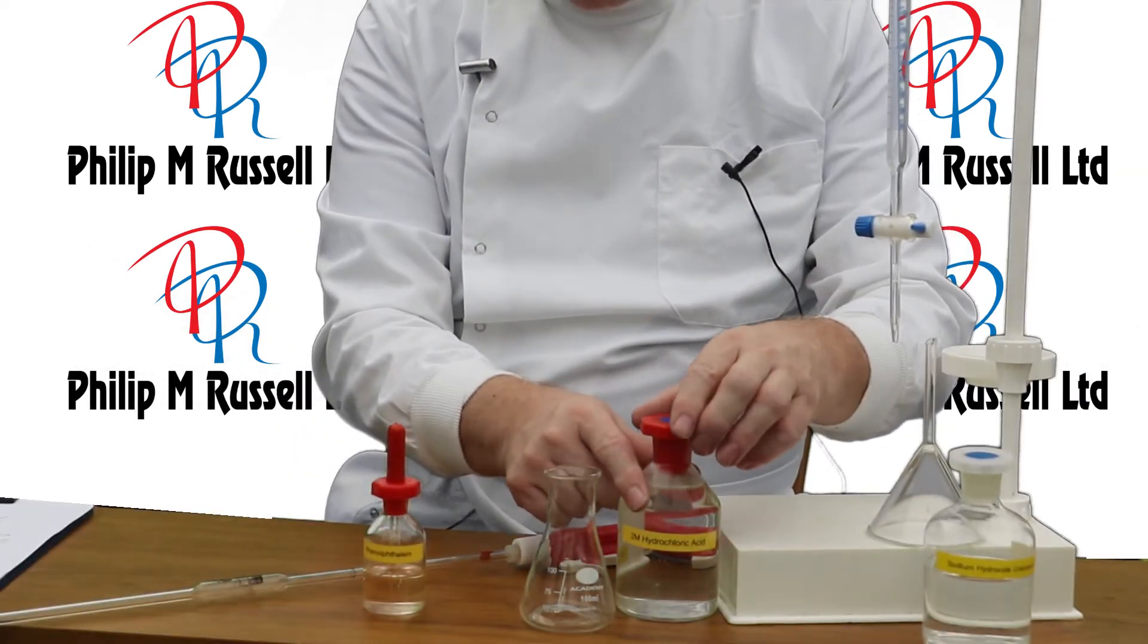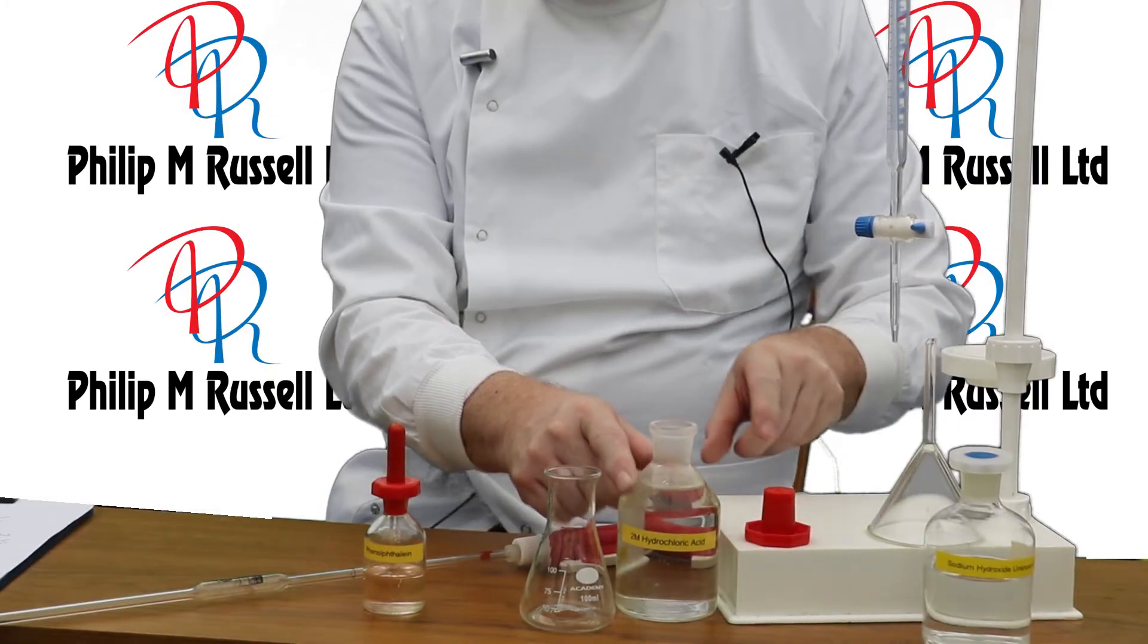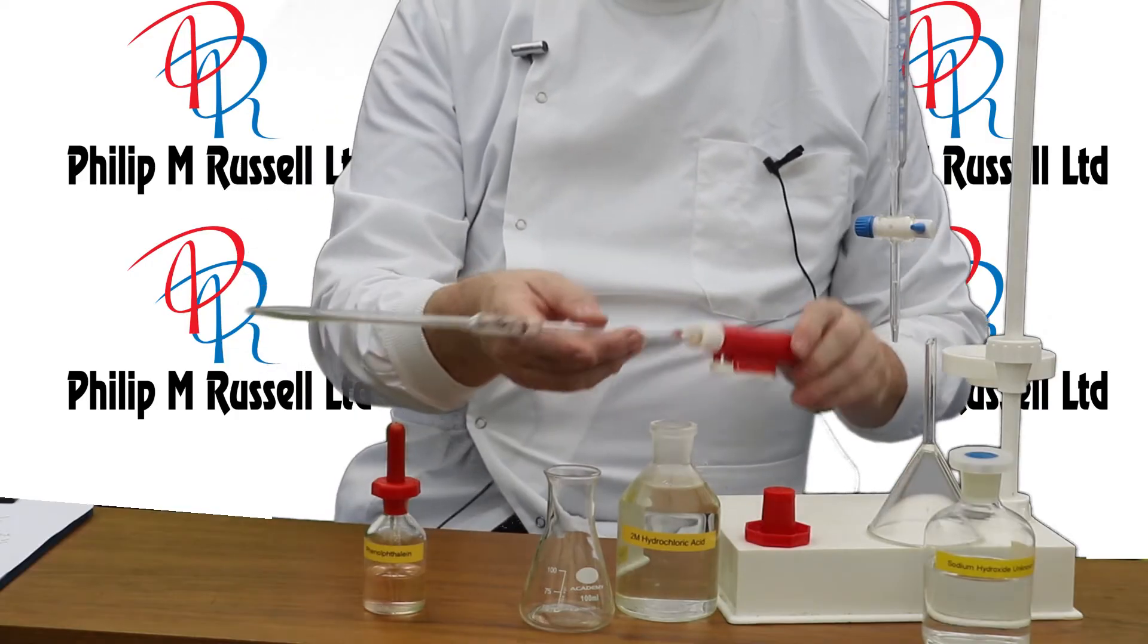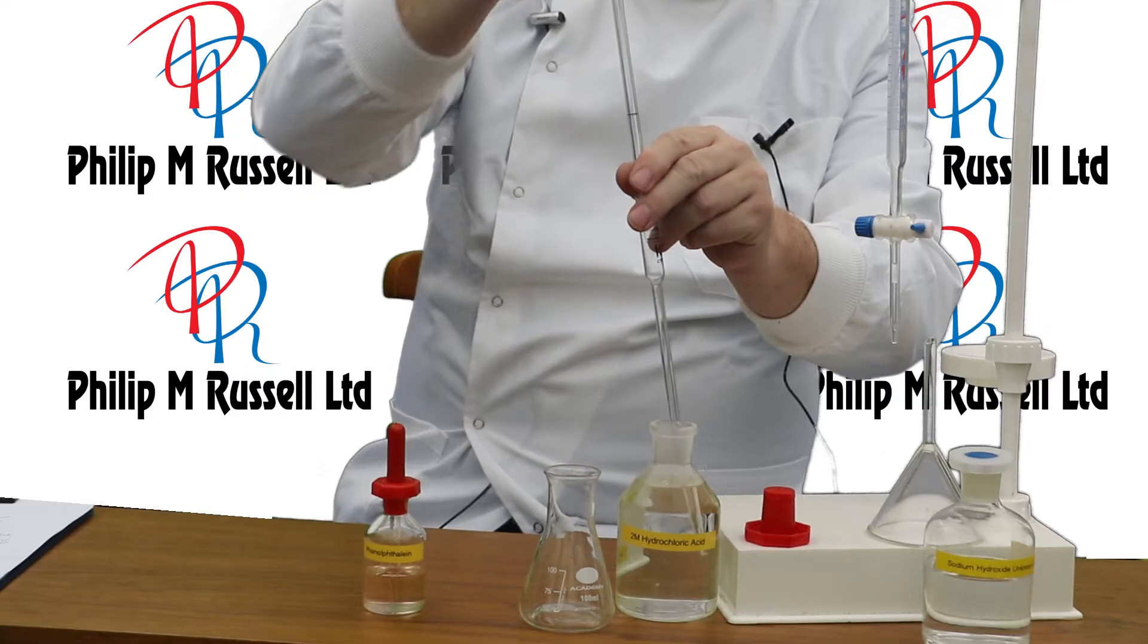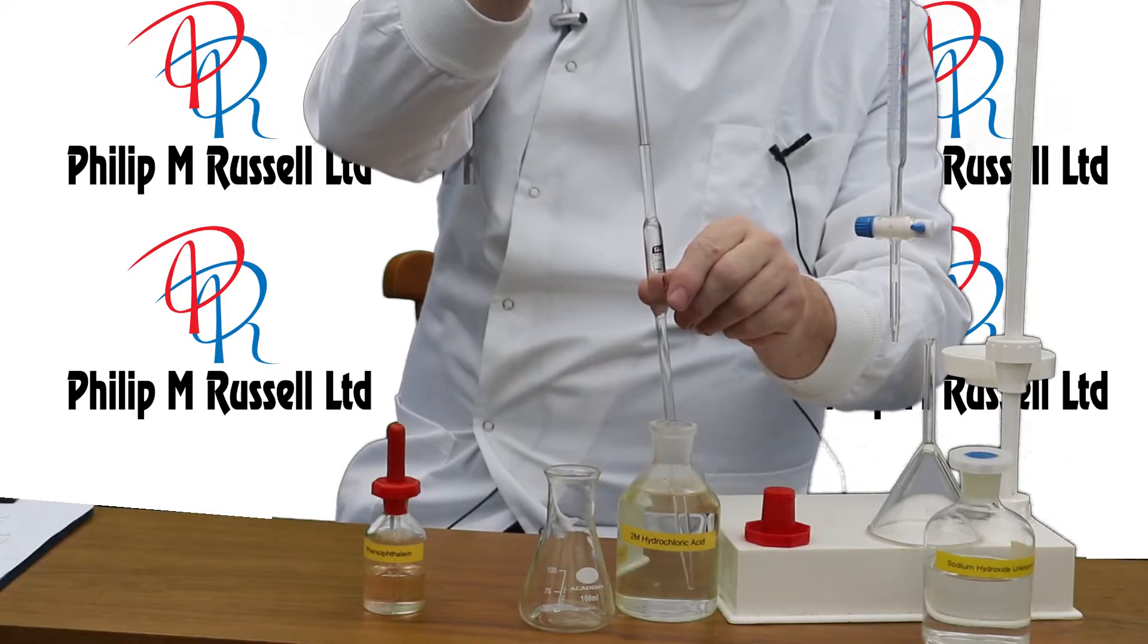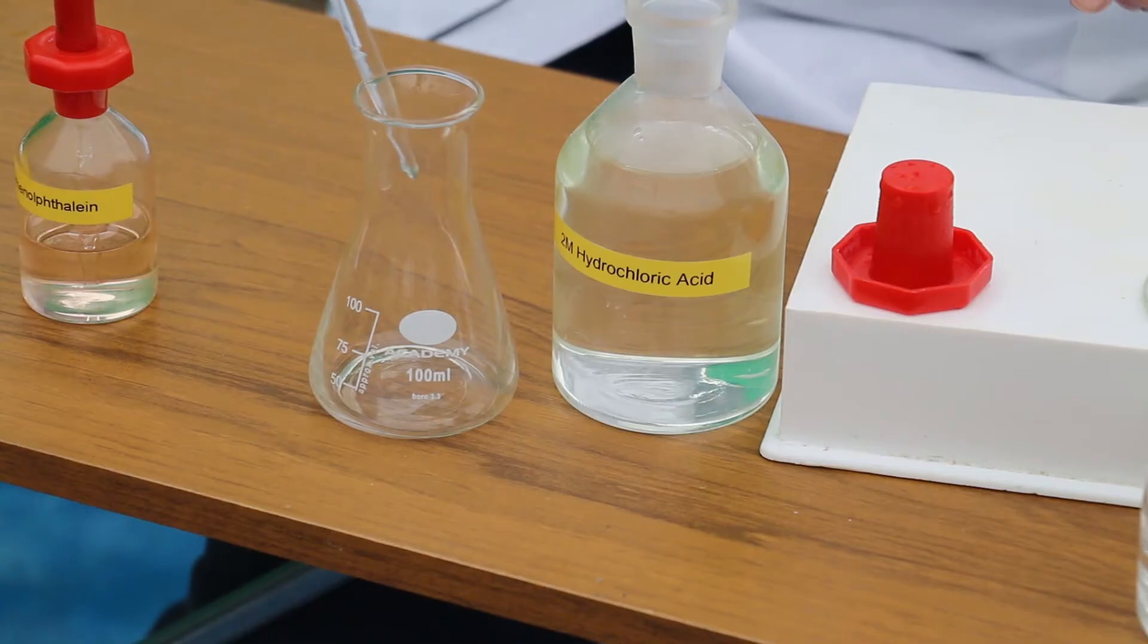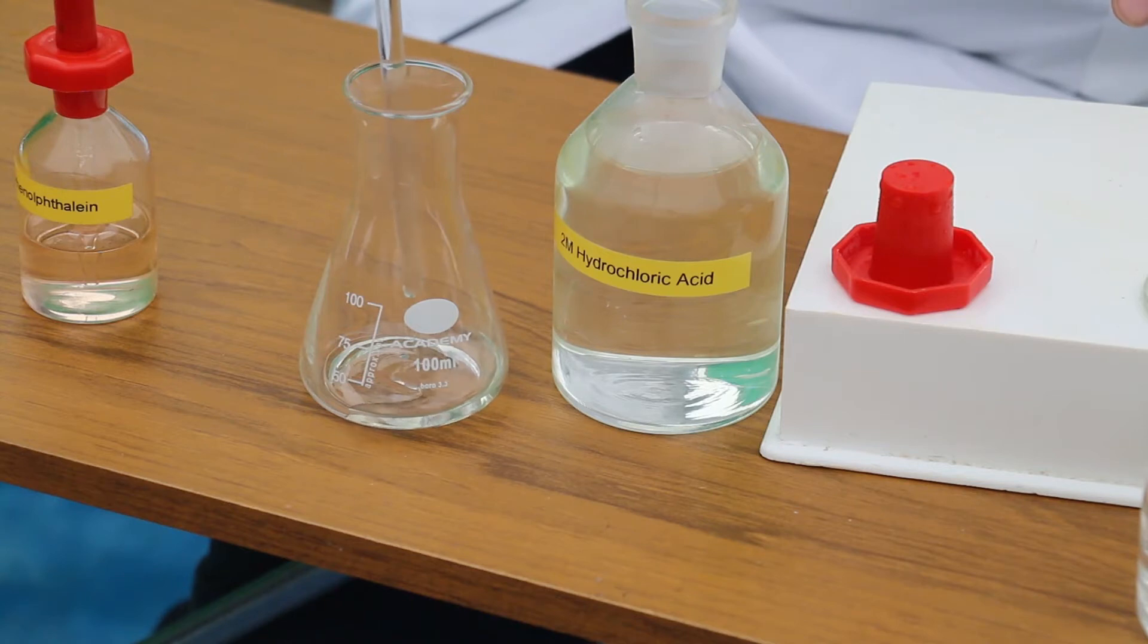Our first operation is to take some hydrochloric acid and put that in this conical flask. To do this we're going to use a pipette. I'm going to suck up exactly 10 centimeter cubed of hydrochloric acid and place it into this conical flask.